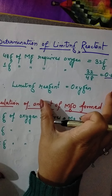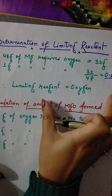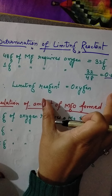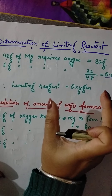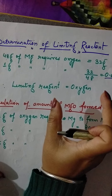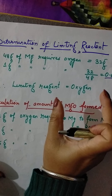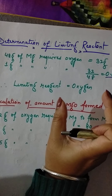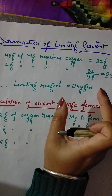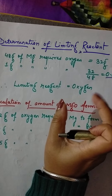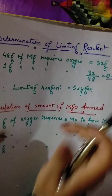Therefore, the limiting reagent is oxygen. This is how we identify the limiting reactant — by writing the balanced chemical equation and grasping the information in terms of moles and masses.